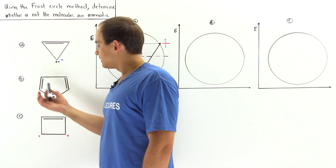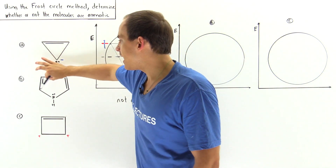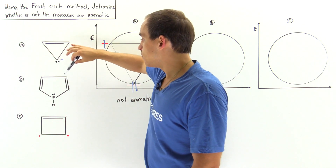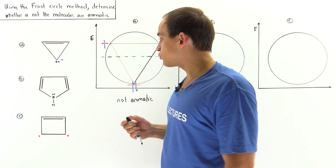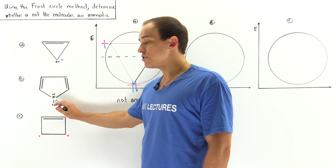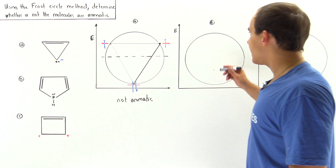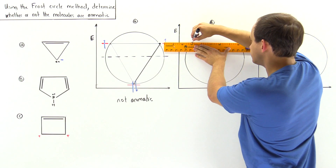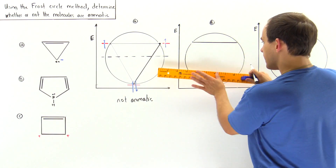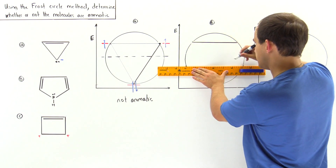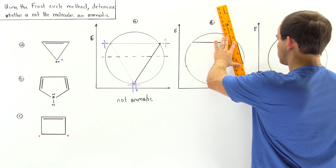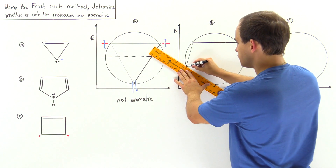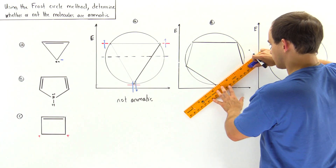Now let's move on to molecule B. We have a five-sided polygon — a cyclopentadienyl anion. We have two double bonds, each representing two pi electrons, plus two electrons on the end, giving a total of six pi electrons. Let's begin by approximating where the five intersections will be. Here is our vertex at the bottom, and these are the two lines connecting upward.